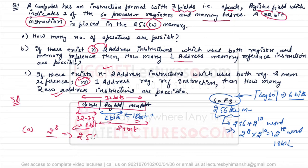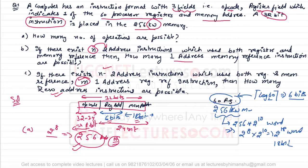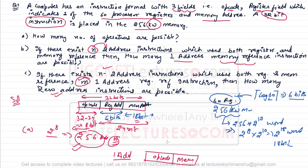So we can have a total of 256 two-address instructions. For part two, they say if there exist n two-address instructions — where n equals 256 — which use both register and memory reference, how many one-address memory reference instructions are possible? For one-address instructions, there will be only two fields: operation code and memory address — no register reference field.